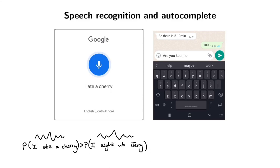Let's look at another example. Here I'm using WhatsApp and I'm typing to a friend. I've written 'are you keen to' and WhatsApp is giving me some options for the next words. How does it know which words are likely to follow the words I've already typed? In other words, how does it know that the probability of 'maybe' given that I've already typed 'are you keen to' — how does it know that this probability is relatively high given these preceding words?